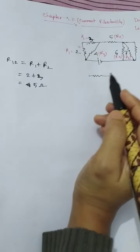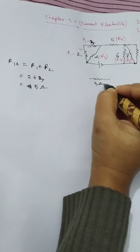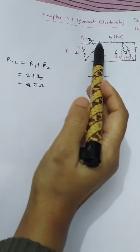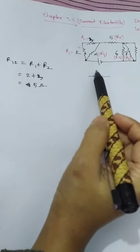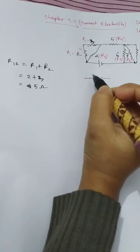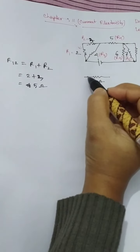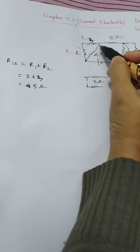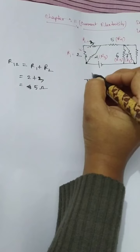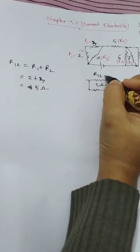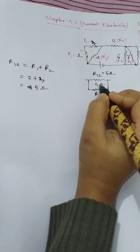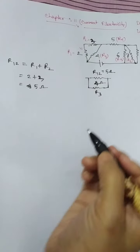We have got the equivalent resistance for R1 and R2 as 5 ohm, so instead of R1 and R2 we can write 5 ohm here. Now looking at resistor R3, it is connected to the end of R1 and R2. Since we are combining R1 and R2 as a single resistor R12, R12 equals 5 ohm and R3 equals 4 ohm. These two are in parallel.